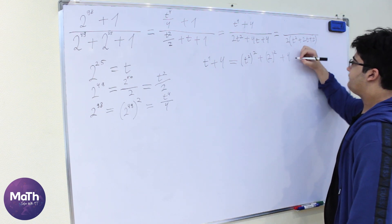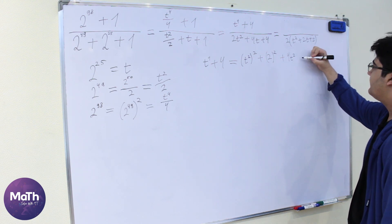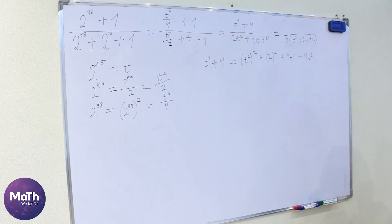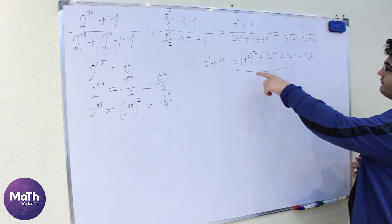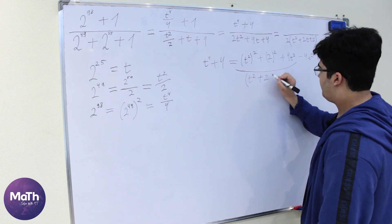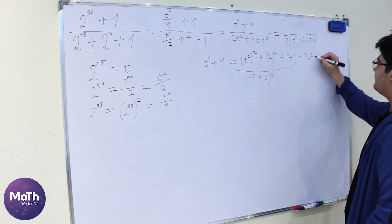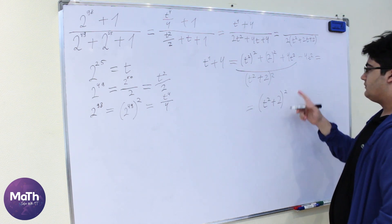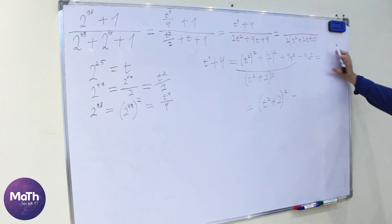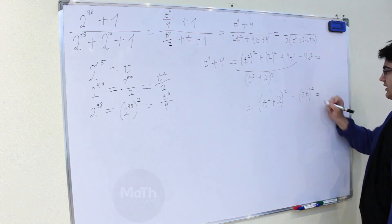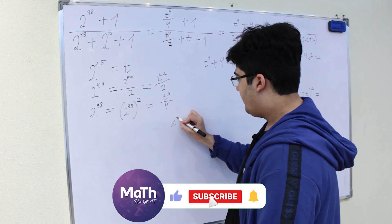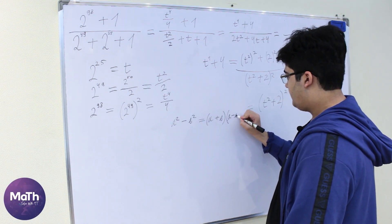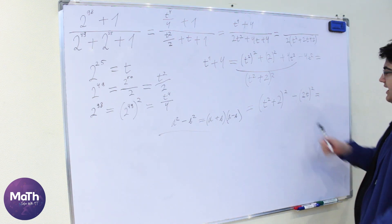Now let's add and subtract 4t squared — writing 4t squared minus 4t squared, which equals 0 so nothing has changed. This gives us t squared plus 2 squared minus 2t squared, which we can write as 2t in squared form. We can apply the formula a squared minus b squared equals a plus b times a minus b.